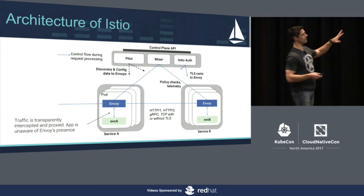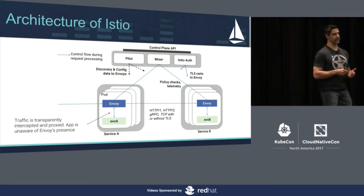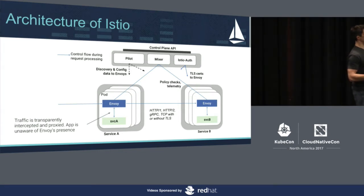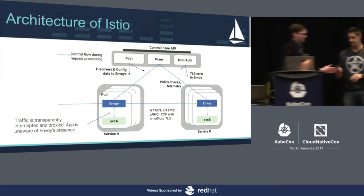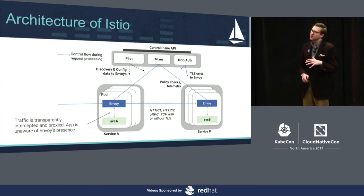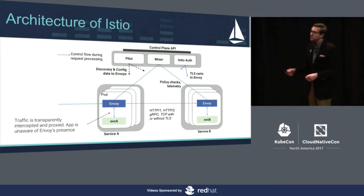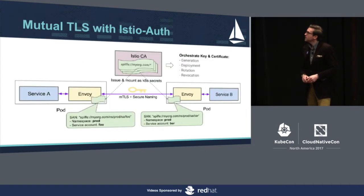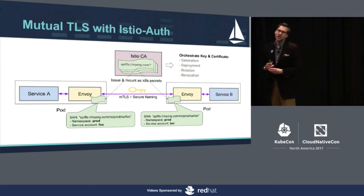We don't want to go into too much more detail on architecture. What we want to do now is talk about what are the key things for securing Istio. I'm going to turn it over to Spike. The big mainline feature we've gotten into Istio around security is the ability to set up mutually authenticated TLS connections for all of the workloads in the service mesh.